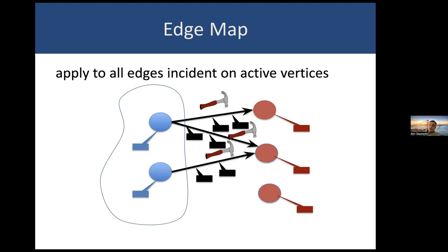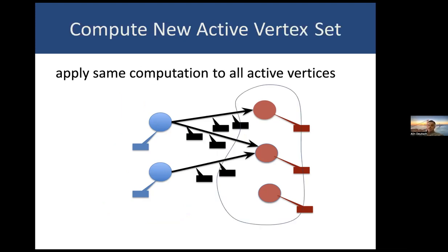These computations, conceptually from the programmer's point of view, run in parallel, and in terms of implementation they are implemented as parallel as possible, exploiting the distributed nature of the data. Once this map has finished, it will also specify what the next active vertex set is — for example, here we have moved the frontier of active vertices from the customers to the products. That allows us to chain such map steps: from this newly activated set of vertices, we can again continue applying vertex and edge maps.